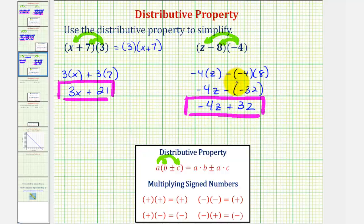After doing this a while, we probably would not show this much work. We can just think of this as negative four times z, which gives us negative four z. And then for the next product, we can think of this as negative four times negative eight, which would be positive thirty-two. So we could simply just write plus thirty-two.